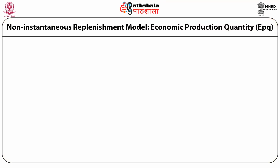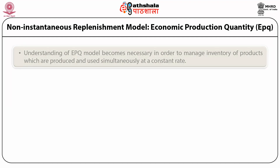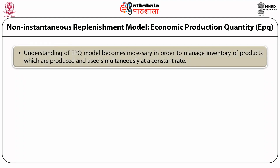Non-instantaneous replenishment model — Economic Production Quantity (EPQ). Understanding of the EPQ model becomes necessary in order to manage inventory of products which are produced and used simultaneously at a constant rate. For instance, in a continuous production line involving dressing of a doll, two processes — putting up a sock and the shoe — are done in sequence. In such a process, one doll enters the system.